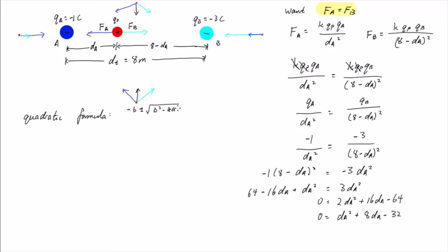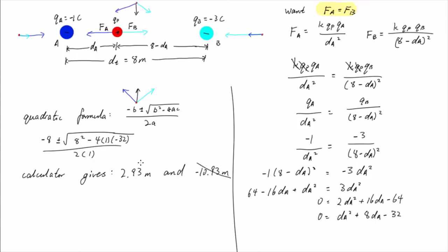Using the quadratic formula, you get two answers for dA: 2.93 meters and negative 10.93 meters. Negative 10.93 meters is located to the left of particle A, which we have already previously eliminated and said was impossible. So the correct answer is 2.93 meters.